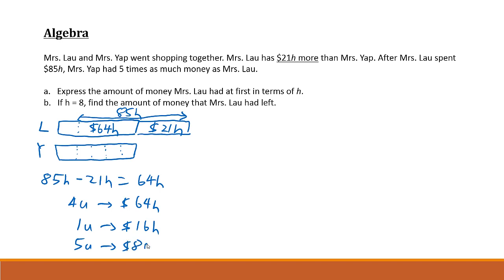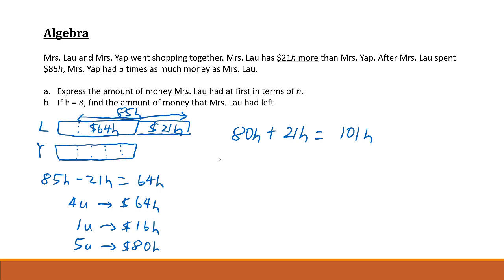To find how much Mrs. Lao had at first, you take 80h plus 21h, and the final answer is 101h dollars. So the answer to Part A is $101h.